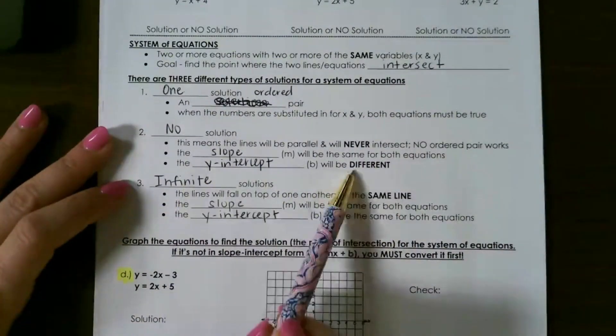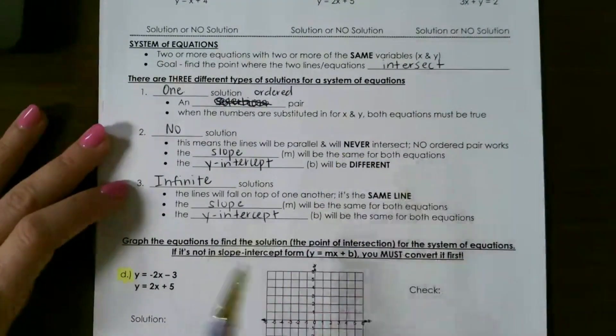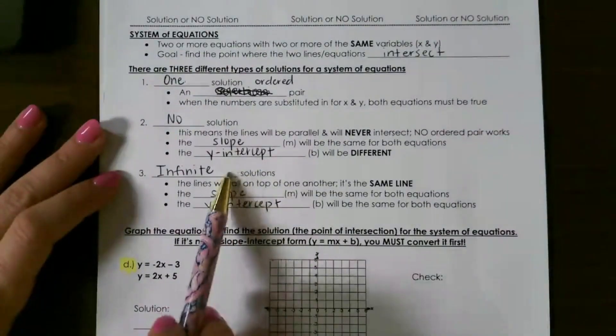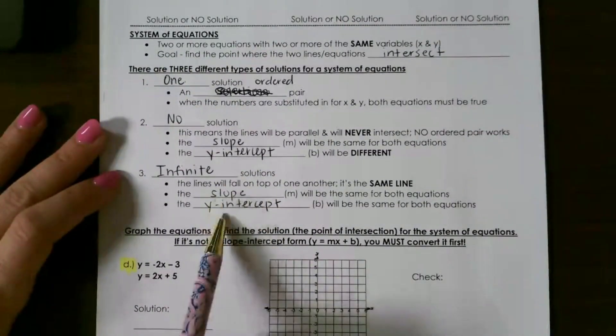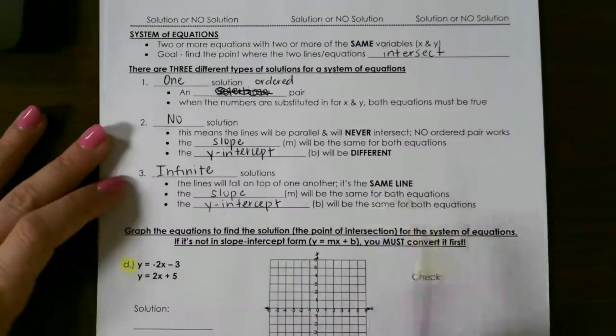No solution means that the slopes are the same but the y-intercepts are different. These will never intersect, so no ordered pair is going to work. Infinite solutions means the slope and the y-intercept will be the same, which means it's going to be the same line.